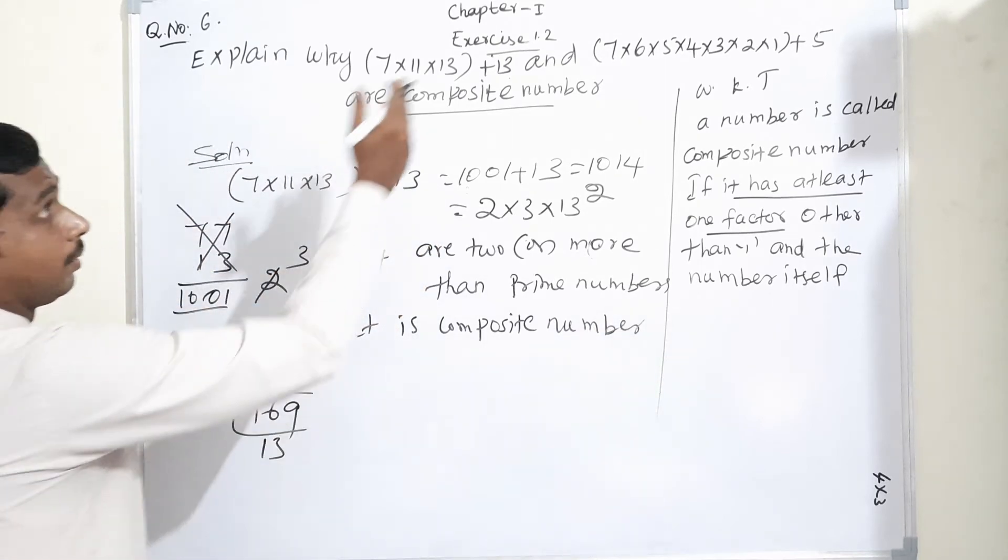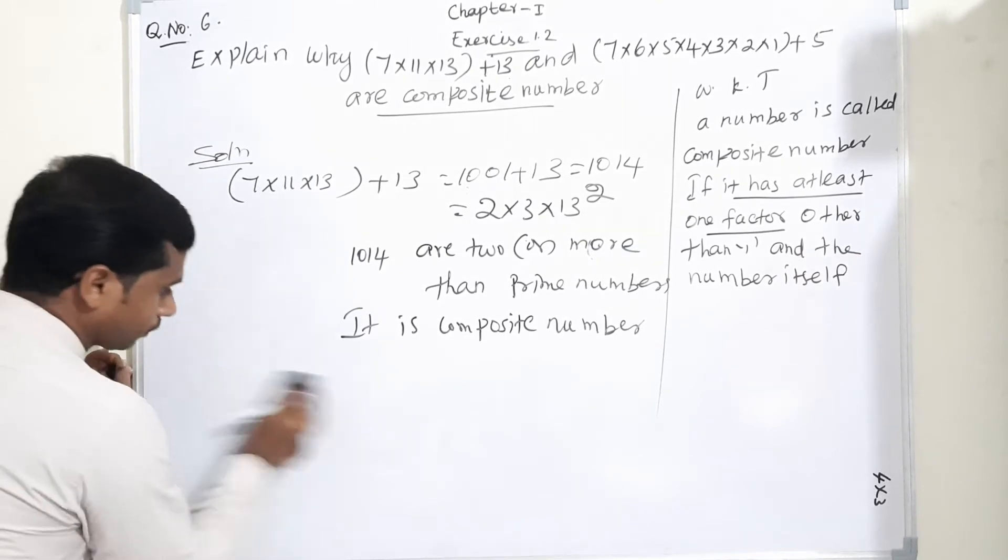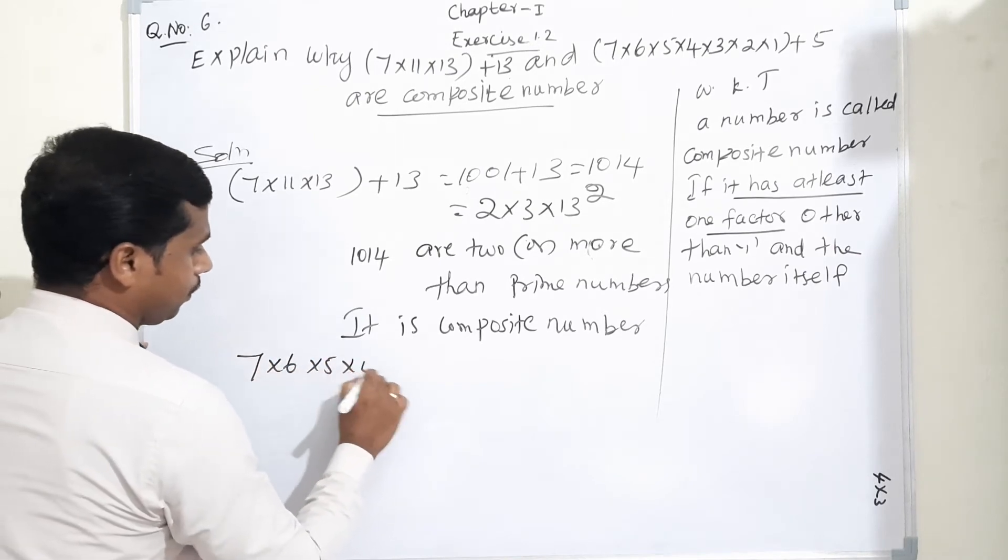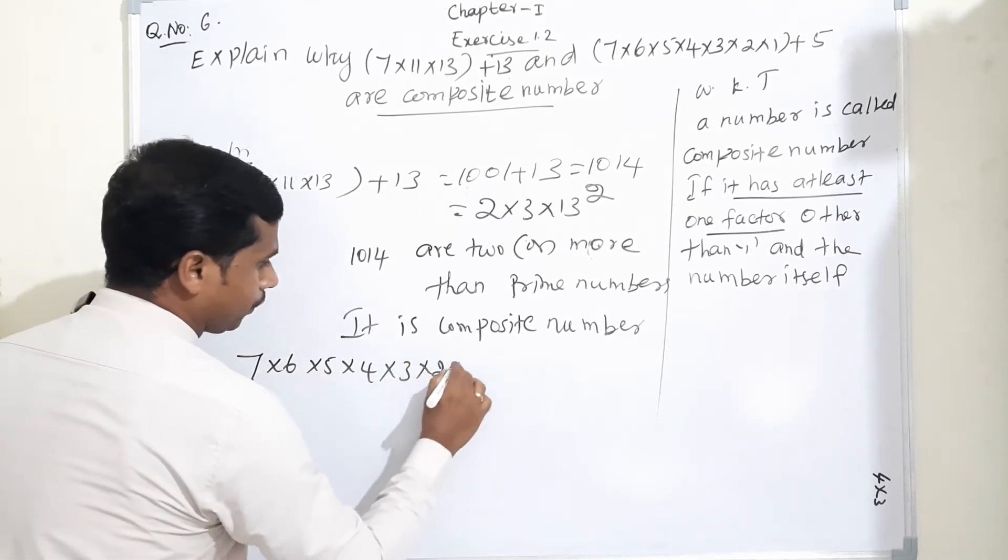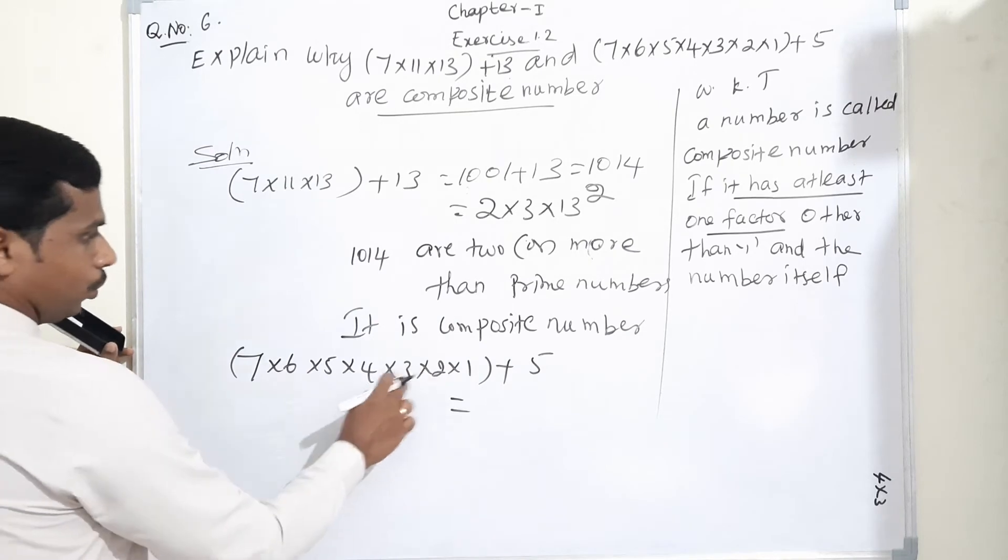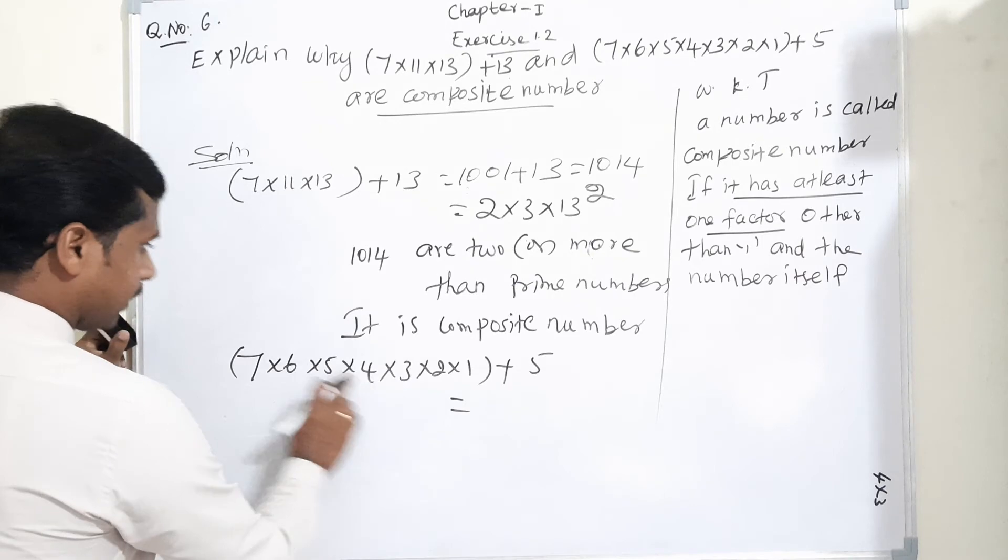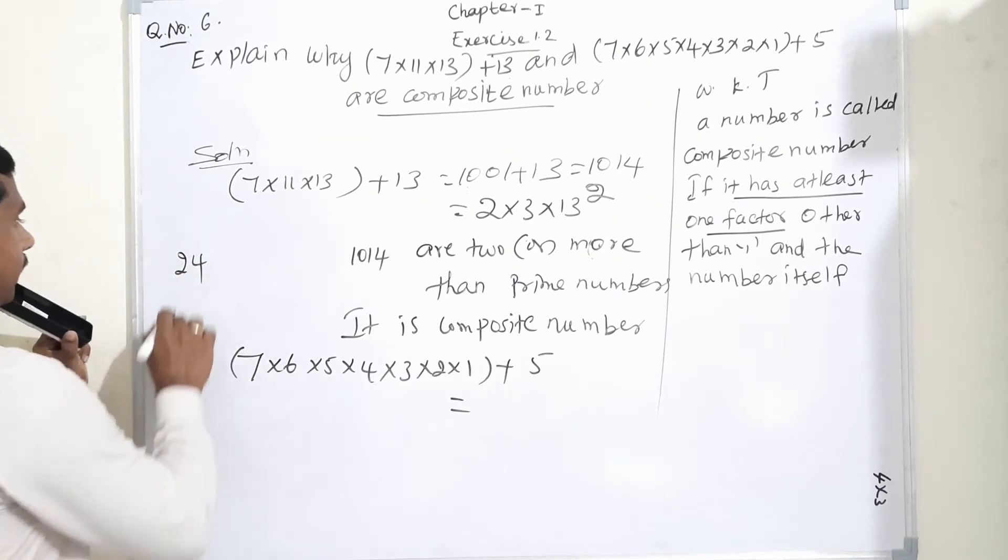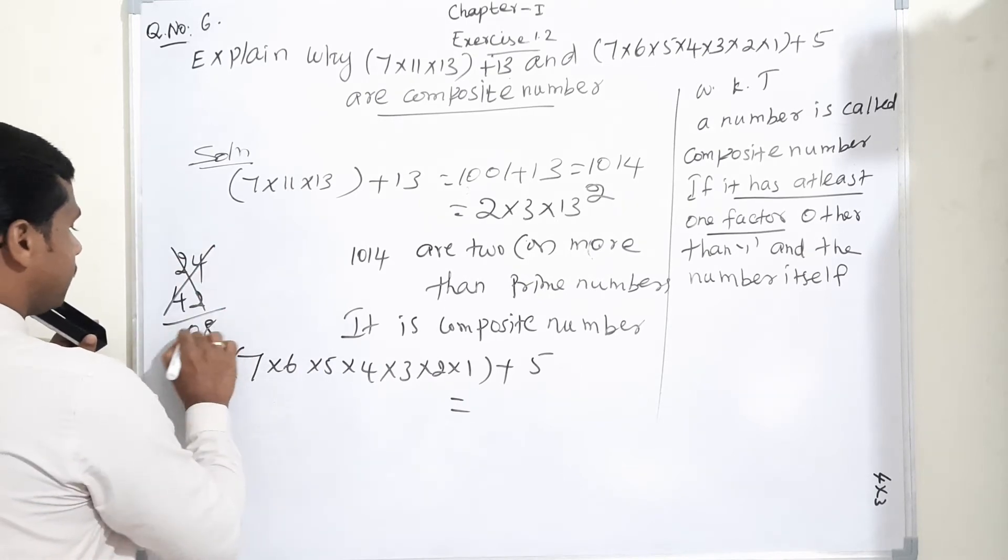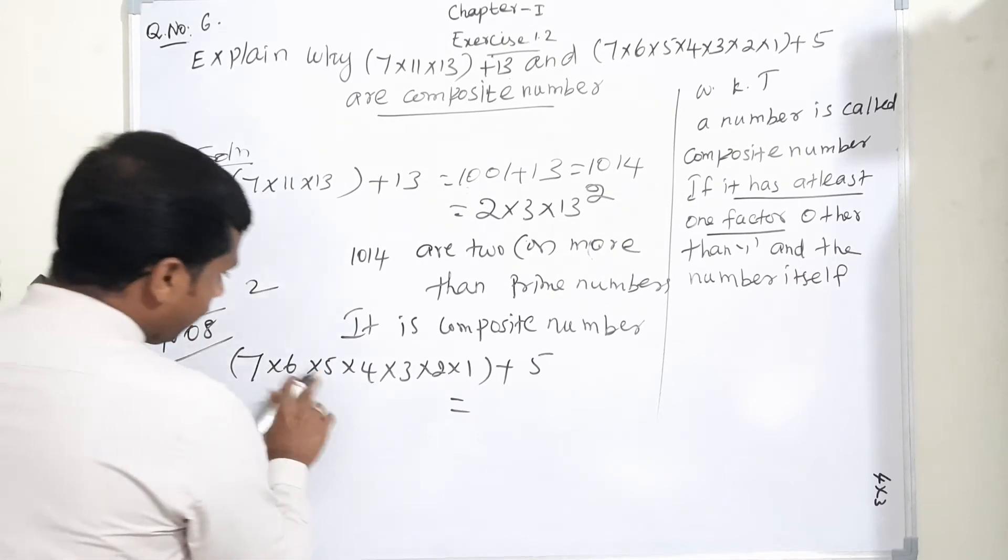Now, I am moving to taking the second condition. What is our second condition? 7×6×4×3×2×1 plus 5. Simple: 2×3 is 6, 7×6 is 42. So listen, 2×3 is 6, 6×4 is 24. Next condition 7×6 is 42. Multiply now: 2×4 is 8, carry 1. 2×4 is 8, 8 plus 2 equals 10. So 1008, here 5 is there.